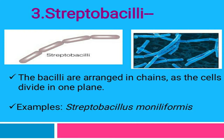The third arrangement is streptobacilli. In streptobacilli, the bacillus cells repeatedly divide and produce many cells that arrange in a chain form. Division here occurs in one plane — either X, Y, or Z. The example is Streptobacillus moniliformis.